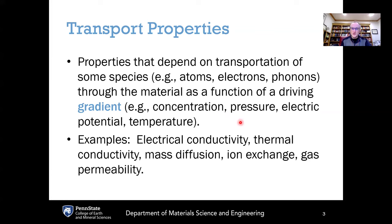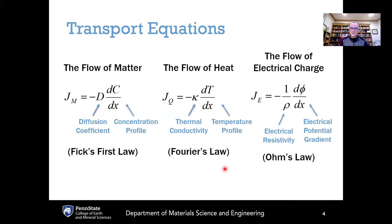Transport properties are properties that depend on the transportation of some species — like atoms, electrons, or phonons — through the material as a function of a driving gradient, such as a concentration gradient, pressure gradient, electrical potential gradient, or thermal gradient. Examples include electrical conductivity, thermal conductivity, diffusivity, ion exchange processes, and gas permeability.